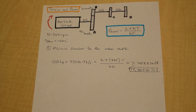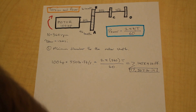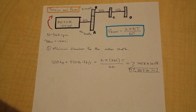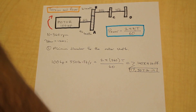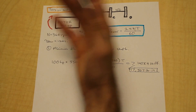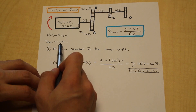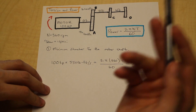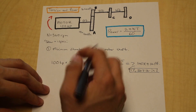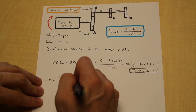Now, we want to solve for the minimum permissible diameter. In order for that to happen, the question needs to give us an allowable stress — or maximum allowable stress — that the shaft can withstand. The diameter that we solve for using that value is going to be the minimum diameter. That's a very popular question in this topic and a potential exam question, so look out for that. We are given 12 kips per square inch as our tau allowable.